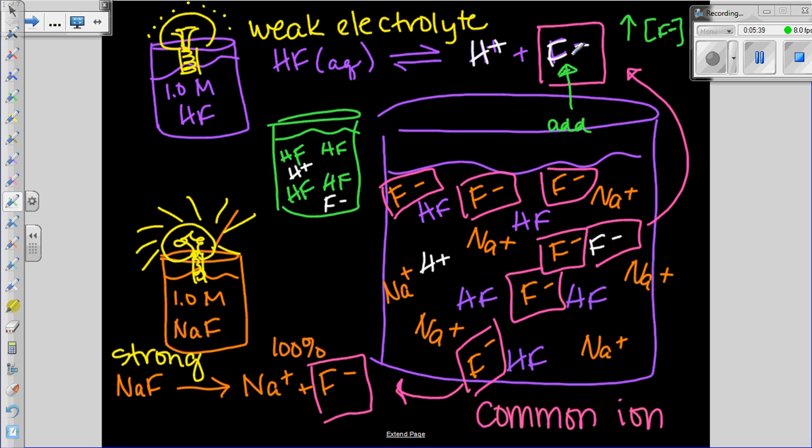So if we increase the concentration of our common ion, what happens is the equilibrium is going to shift toward reactants to reduce the stress. So what that means is our equilibrium constant would get smaller. There would be fewer H plus ions present.